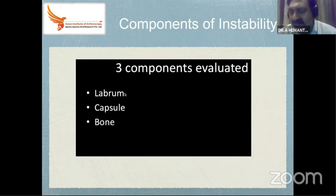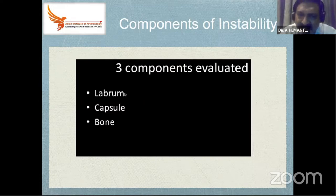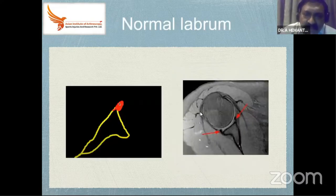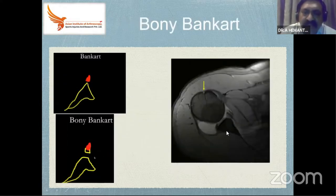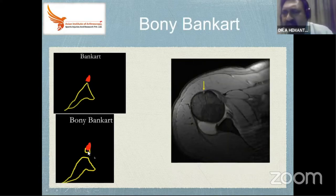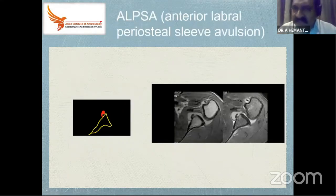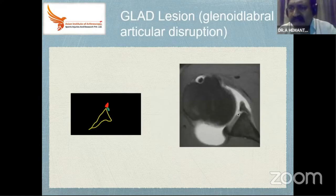In instability, three components must be assessed: the labrum, capsule, and bone. The labrum is a 360-degree structure — we divide it into quadrants or by the clock: one o'clock, three o'clock, and five o'clock. A normal labrum is shown. Then we see a Bankart lesion — lifting of the labrum. A bony Bankart has a piece of bone. There are many described lesions: a PARI lesion where the periosteum is also lifted along with the labrum, and the ALPSA lesion — anterior labral periosteal sleeve avulsion.